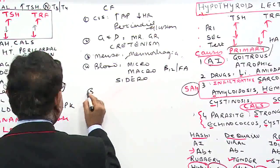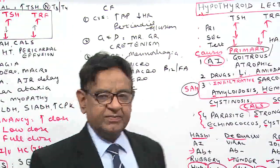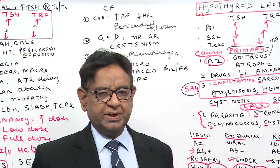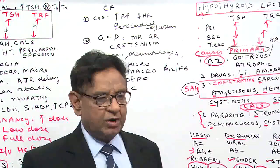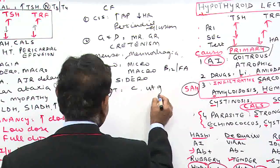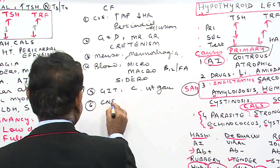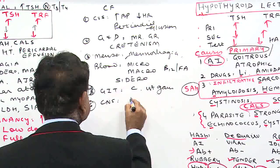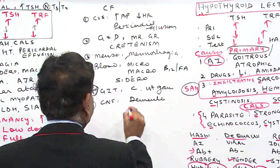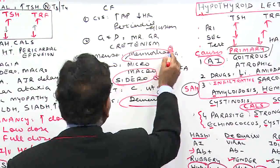In the GIT, you get constipation — any patient presenting with chronic constipation, hypothyroid should be ruled out. The patient may also present with weight gain. In the CNS, classically the patient has dementia — this is a most frequently asked question. Causes of reversible dementia include hypothyroid, B12 deficiency, and subdural hematoma.